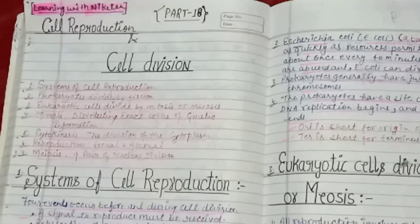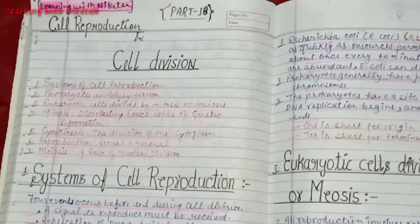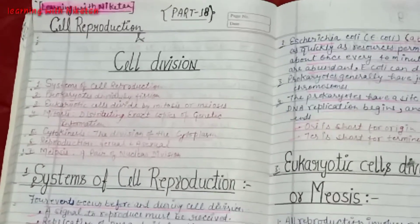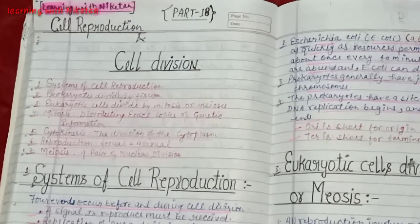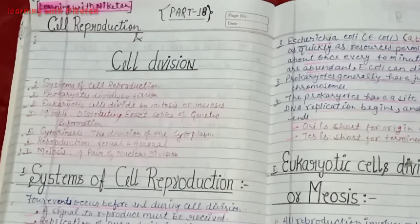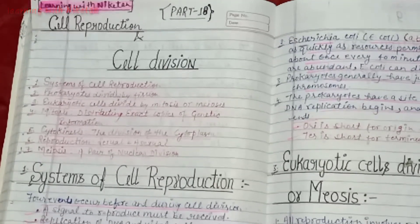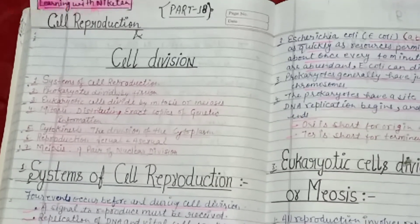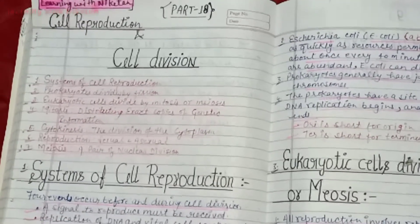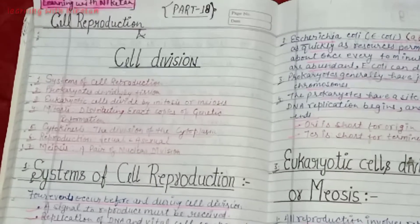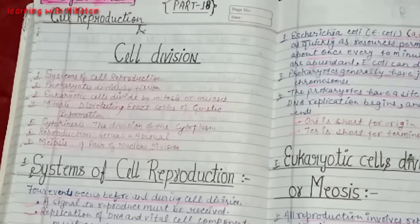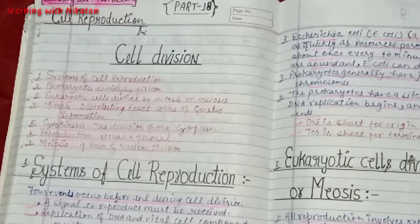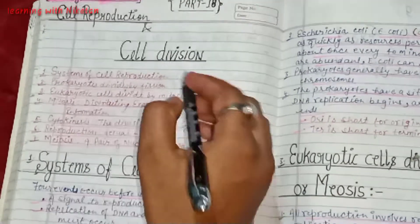Hello friends, welcome to my YouTube channel Learning with Niketan. This is the cell reproduction and cell division — the next topic in cell biology and the next of the cell cycle. So here we will study about the seven parts of it.